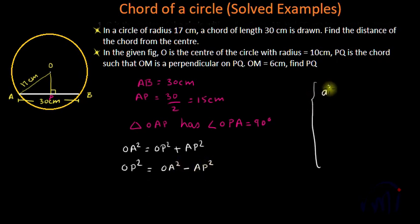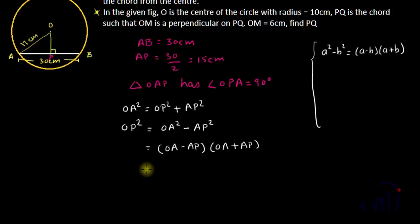We know A square minus B square is equal to A minus B into A plus B - this we have learned in algebra. So this can be written as OA minus AP multiplied by OA plus AP, and we know OA is 17 and AP is 15. If I substitute the values, 17 minus 15 is 2, multiplied by 17 plus 15 is 32, and 32 multiplied by 2 is 64.